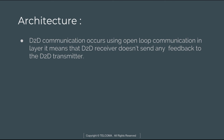In terms of air interface for device-to-device signal and data transmission, resources are allocated either by the eNodeB or by the user equipment randomly from a pre-configured pool of resources. Device-to-device communication occurs using open loop communication, meaning the D2D receiver does not send any feedback to the transmitter, because the loop is open in nature.